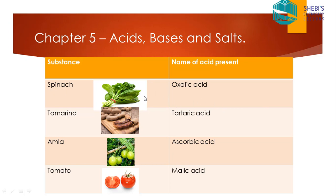Spinach mainly contains oxalic acid, though it contains other acids as well. Tamarind contains tartaric acid. Amla or gooseberry contains ascorbic acid. Tomato mainly contains malic acid. One important point: ascorbic acid is vitamin C. So all citrus fruits contain vitamin C, which means they all contain ascorbic acid.